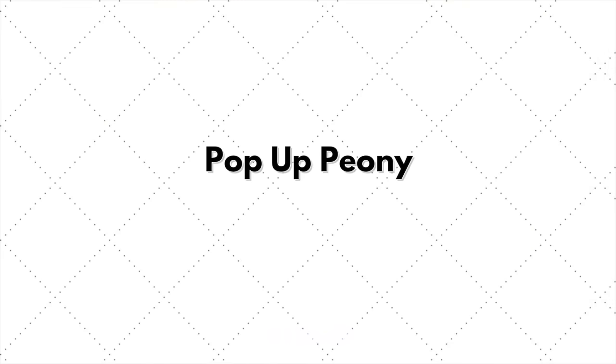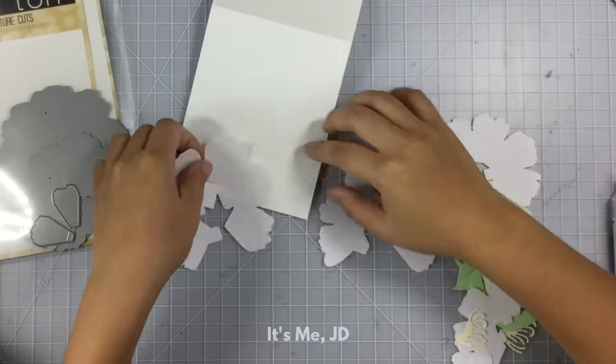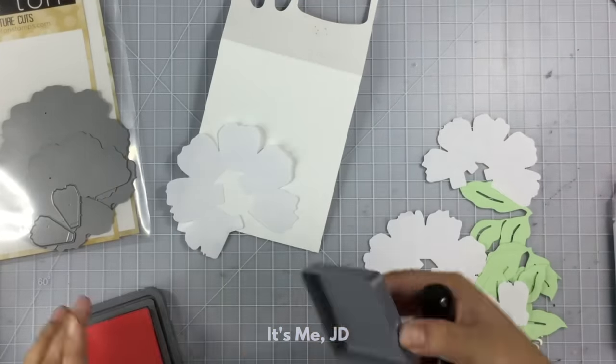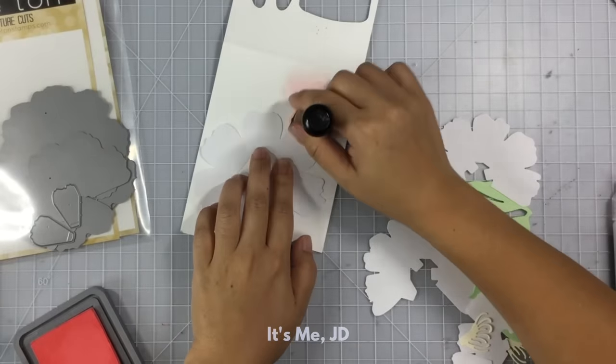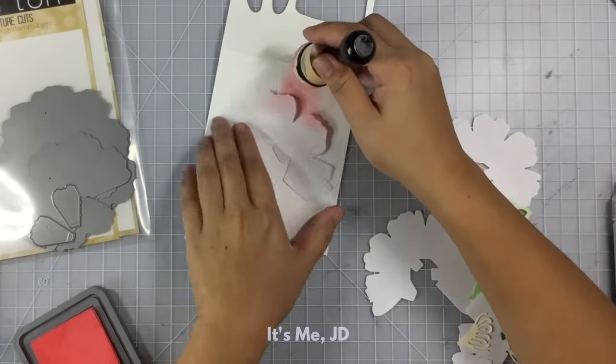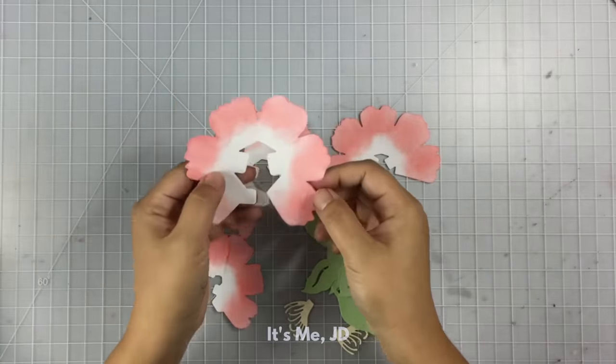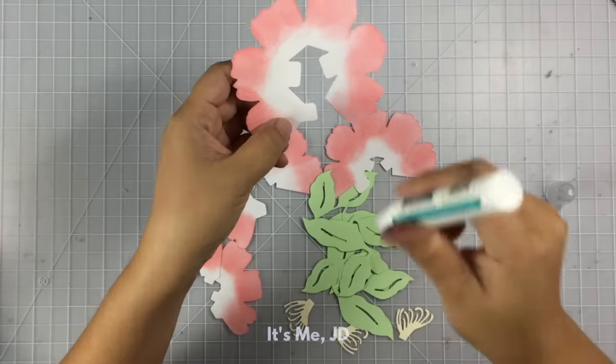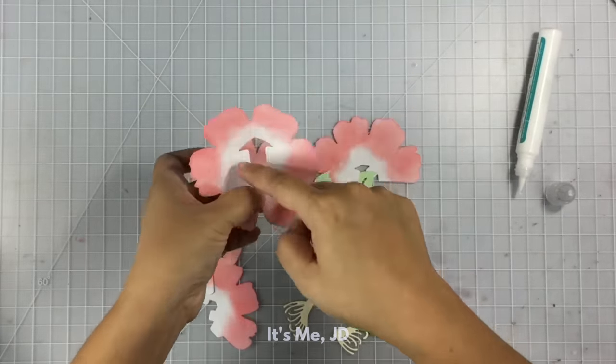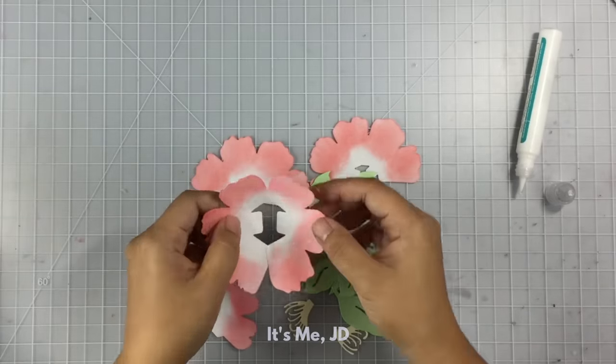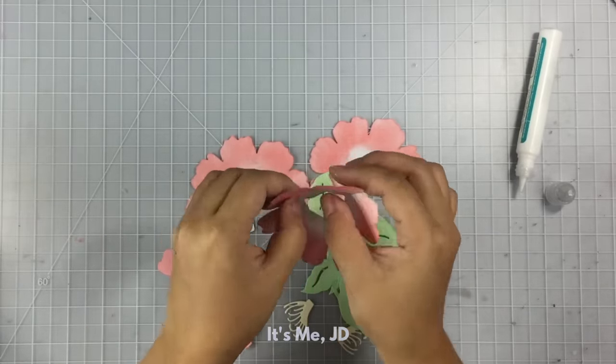The next pop-up card features this awesome pop-up peony die. The manufacturer suggests to use lightweight paper for the pop-up peony, so I'm just using some printer paper and I'm zhuzhing it up with some distressed oxide inks. Once I've got all of my pieces, it's time to start assembling them. So what you want to do is create a peony ring.